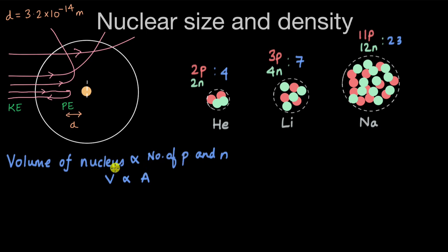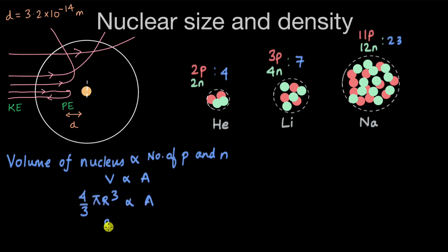Experimentally, it was noted that the shape of the nucleus is mostly spherical — some nuclei do have different shapes, and even spherical ones aren't purely spherical, but we can approximate it as a sphere for the mathematics. So we write volume as (4/3)πr³, where r is the radius of the nucleus. This is proportional to mass number A. Since (4/3)π is a constant, we can write r³ is proportional to A.